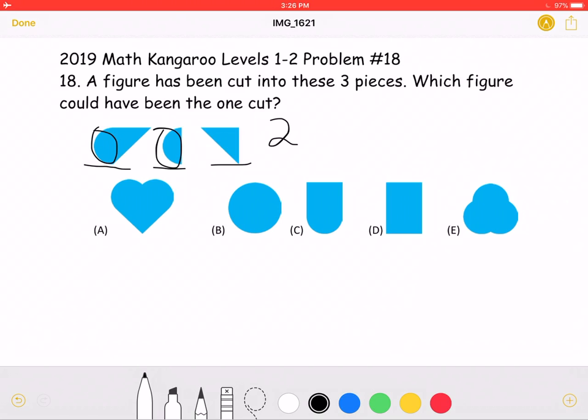So answer choice A has a total of two curves. One here, one here.